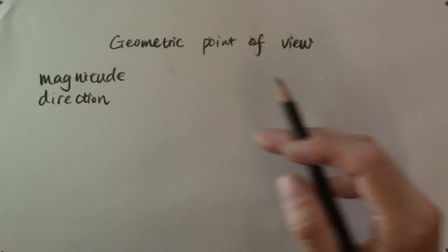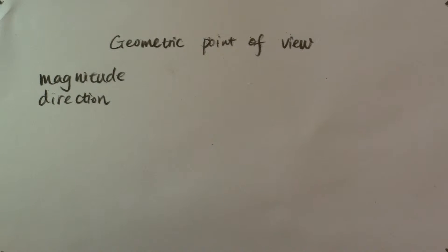This is connected with the geometric point of view for vectors. Geometrically, we can represent a vector by a directed line segment. For example,